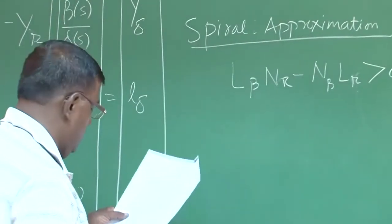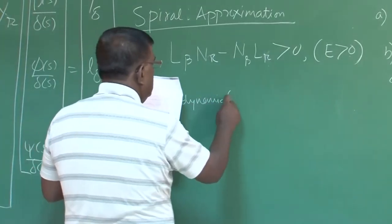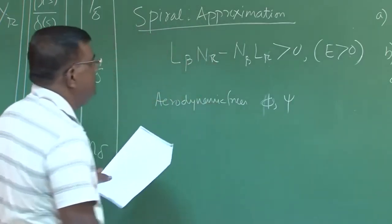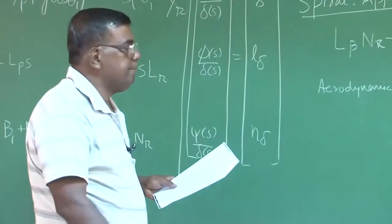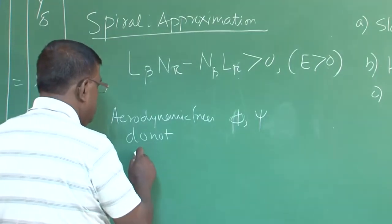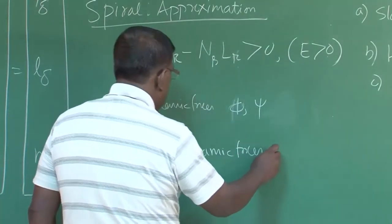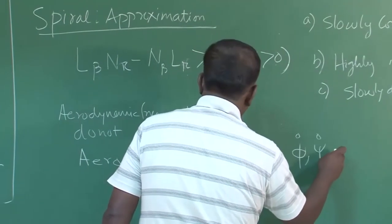Before going into the spiral approximation, please also understand that aerodynamic forces do not largely depend upon φ (phi) or ψ (psi) for the normal case. For normal flight, aerodynamic forces will not depend on φ or ψ. It is a fair assumption that aerodynamic forces depend on φ̇ (phi-dot), ψ̇ (psi-dot), and β (sideslip angle).